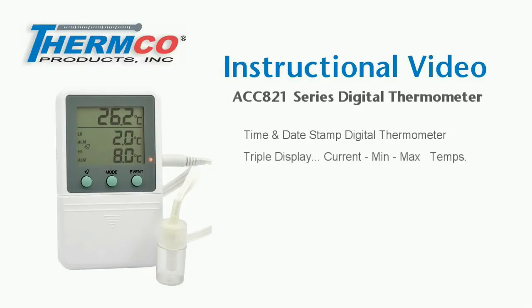The 821 has a triple digit display that simultaneously shows the current, min, and max temperatures. The unit has a temperature range of minus 50 to 70 degrees Celsius, minus 58 to 158 degrees Fahrenheit, with an accuracy of plus or minus 0.3 degrees C, plus or minus 0.5 degrees Fahrenheit.